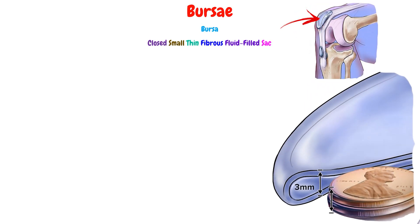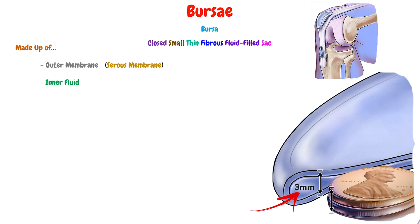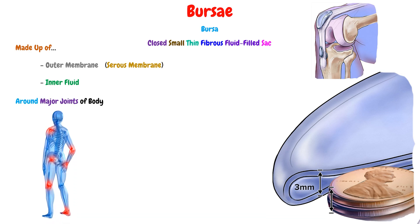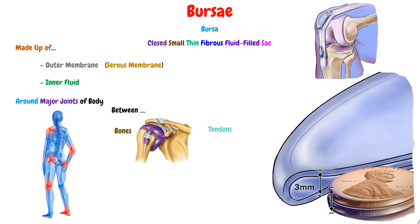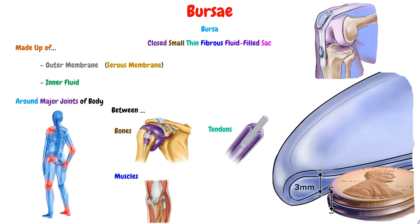We can define the Bursae as a closed, small, thin, fibrous, and fluid-filled sac. This sac will be made up of an outer membrane, which is a serous membrane, and an inner fluid. This Bursae will be found around most major joints of the body, and we can find them between the bones, the tendons, the muscles, and also on the body prominences at the point of friction and stress.